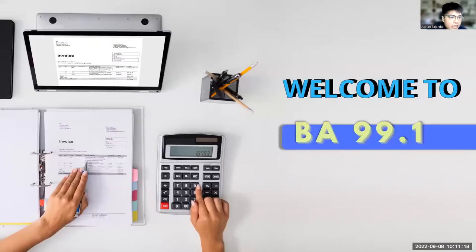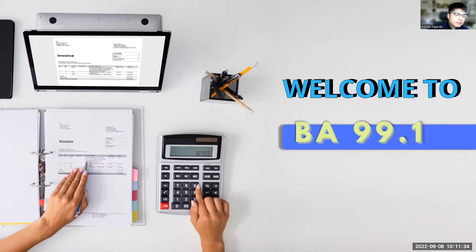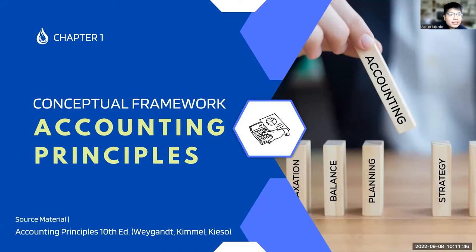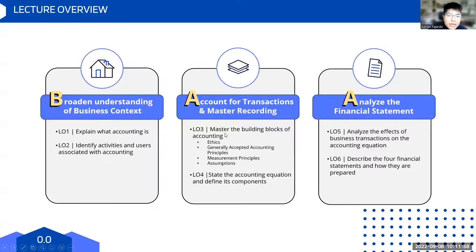That's it for pre-lecture tips. No questions from the class, so we can formally begin our lesson for today. We're going to be discussing chapter one — the conceptual framework and accounting principles. The source material is chapter one of your Weygandt book. Today's lecture is broken down into three major parts following the BAA framework.